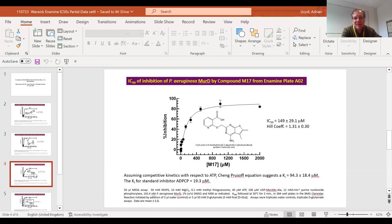Now things get a little bit better. This is compound M17 from another Enamine plate. There's a nice hyperbolic relationship between inhibition and compound concentration. Hill coefficient is 1.3 plus or minus 0.3, so it probably is close to one. If you're looking for something that probably has a single type of interaction to take forward, that would be a candidate.